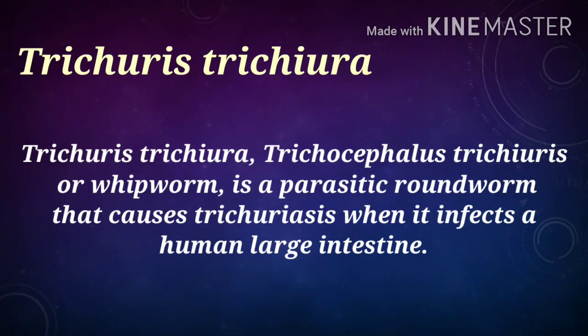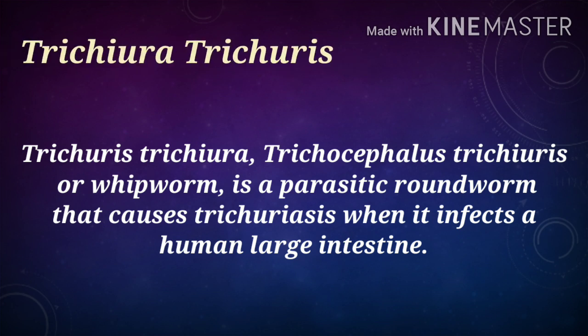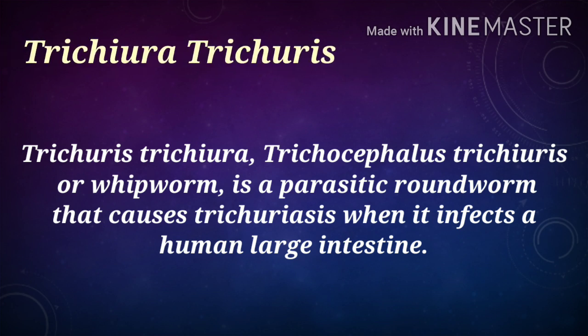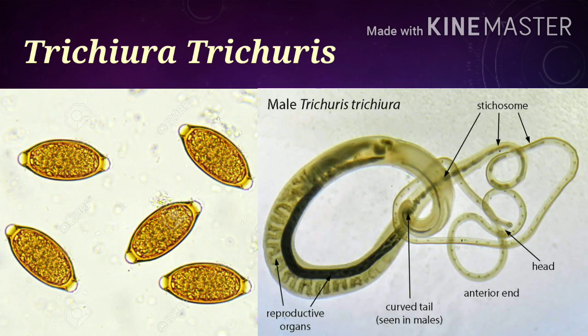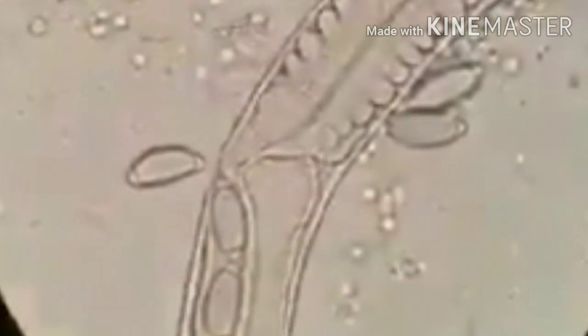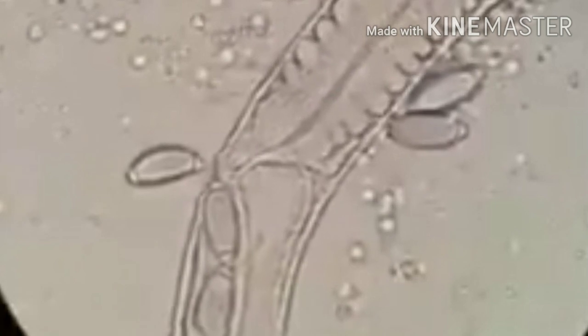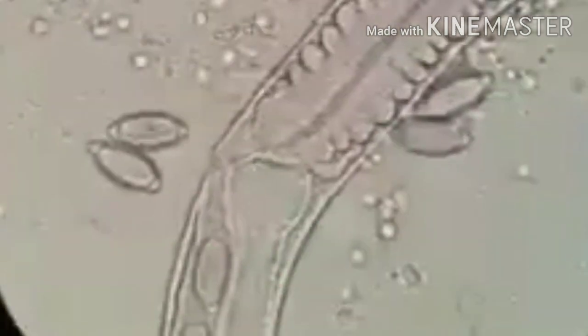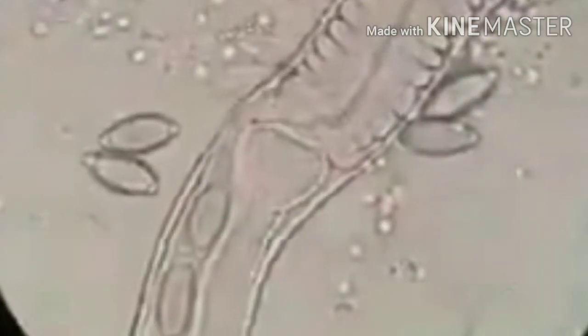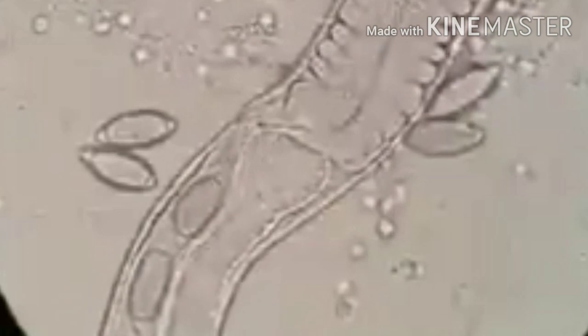The next worm is Trichuris trichiura. Trichuris trichiura is a white worm. It is a parasitic roundworm that causes trichuriasis when it infects the human large intestine. This video shows a Trichuris trichiura egg under microscopic view at 40X high power objective.